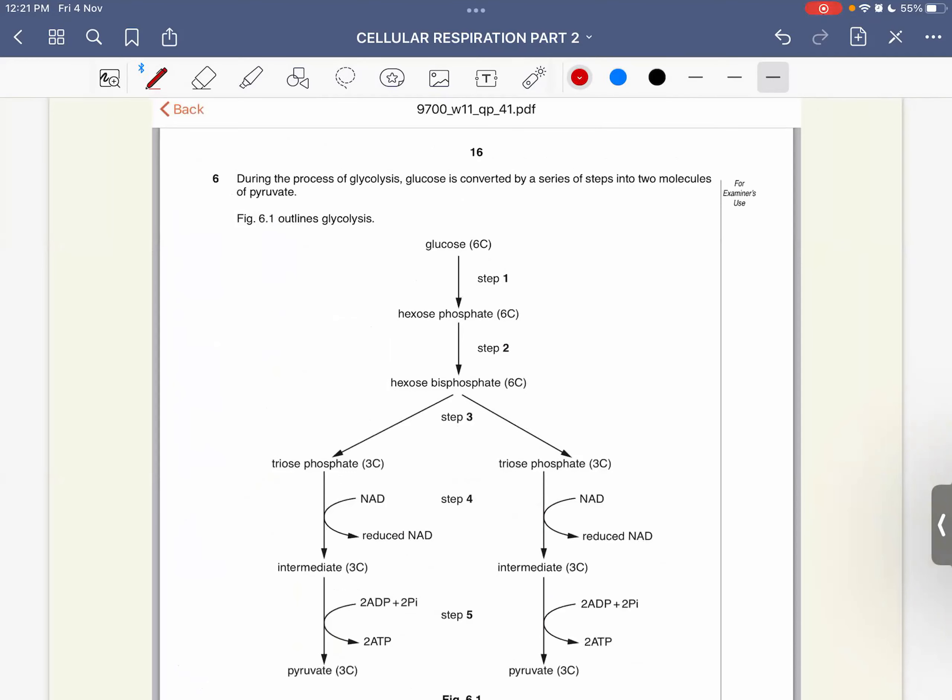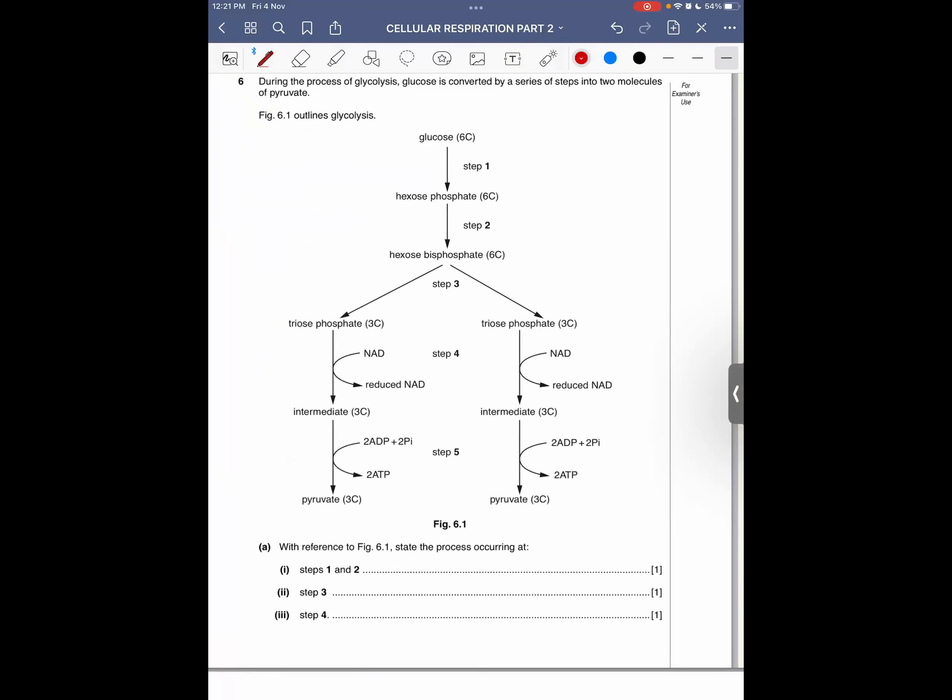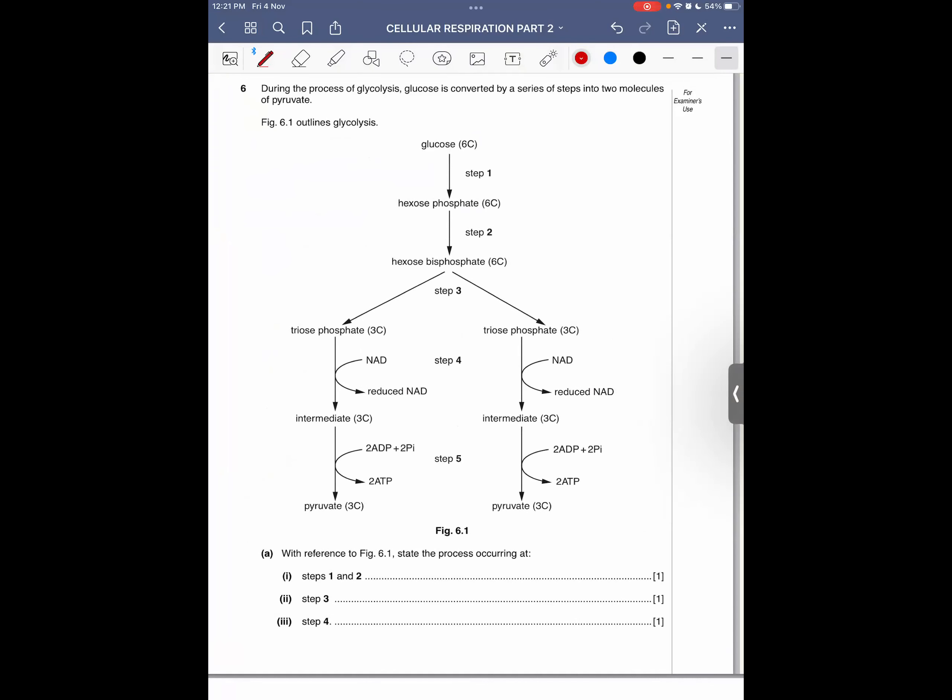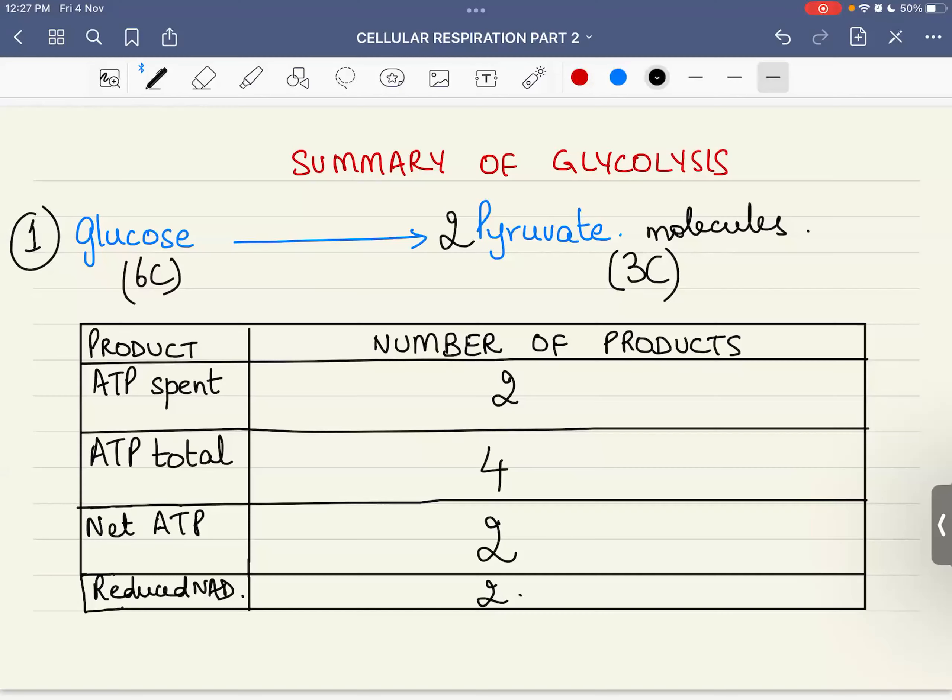Take some time and tell me the answer. ATP spent is 2, ATP total is 4, net ATP is 2, and reduced NAD is 2. This makes sense. In many textbooks they ask you to make a balance sheet of cellular respiration. From amongst all the different steps of cellular respiration, I would say that this is the balance sheet for glycolysis.